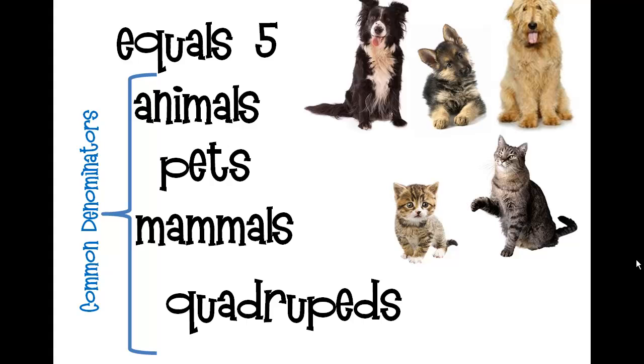Each of these labels are common denominators. Animals is probably the one we would use because it's the least specific — it's the lowest common denominator.